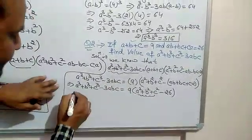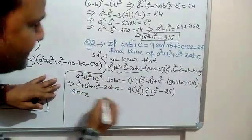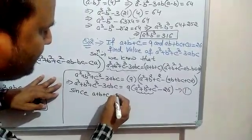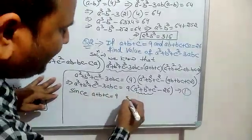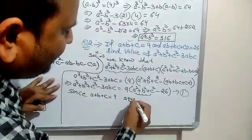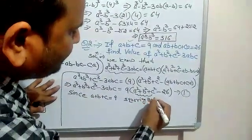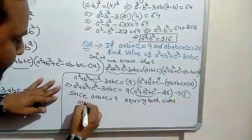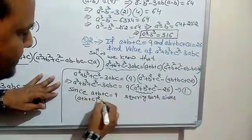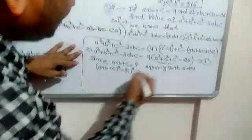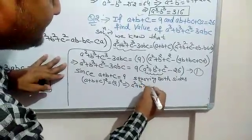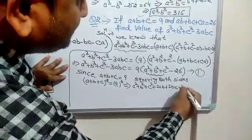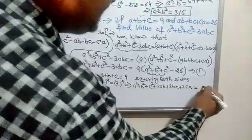Since a plus b plus c equals 9, let this be equation 1. Squaring both sides, a plus b plus c whole square equals 9 square. It further implies a square plus b square plus c square plus 2ab plus 2bc plus 2ca equals 81.